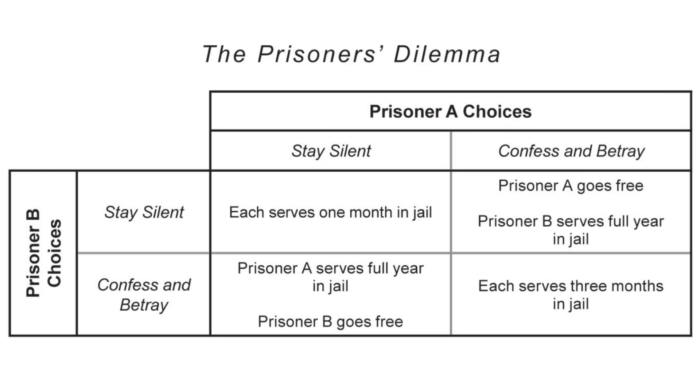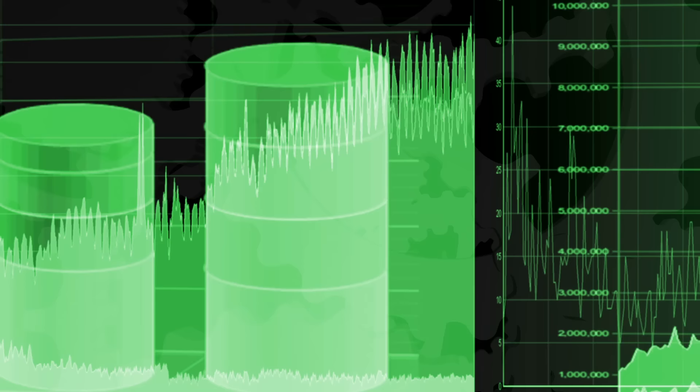You're separated and each have the option to either stay silent or rat on the other and say they did it. And based on what each of you do, you may go to jail for a certain amount of time or you may be set free. The question here is what is in your best interest to do, especially while not knowing what the other person will say. This field grew to have applications in both economics and computer science as well as a few other fields.